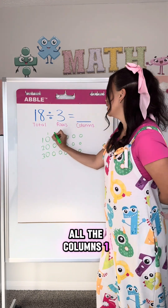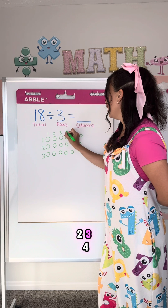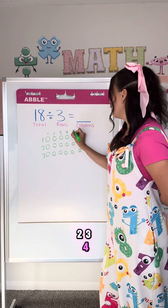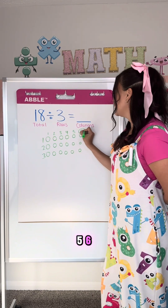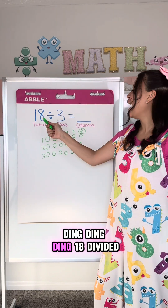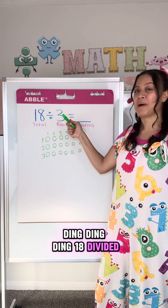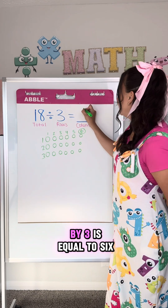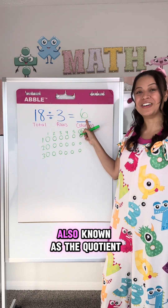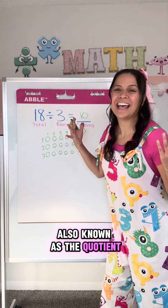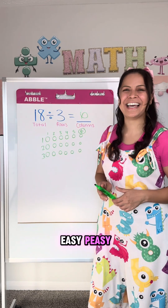One, two, three, four, five, six. 18 divided by three is equal to six, also known as the quotient. Easy peasy!